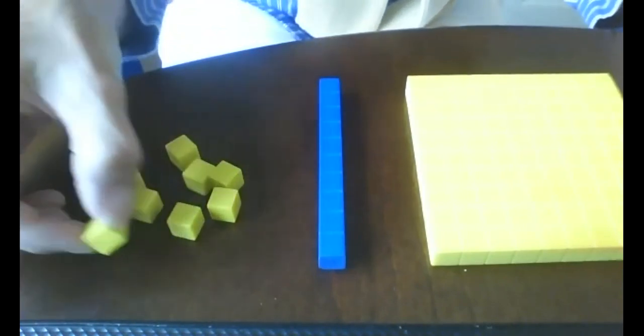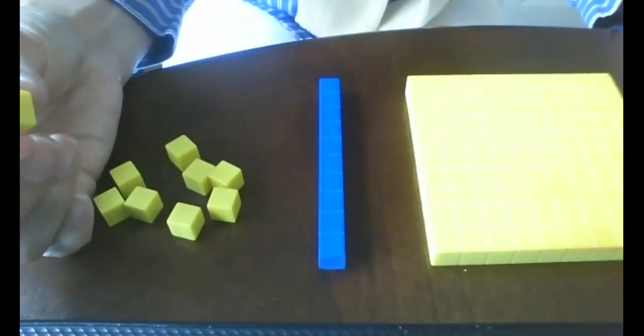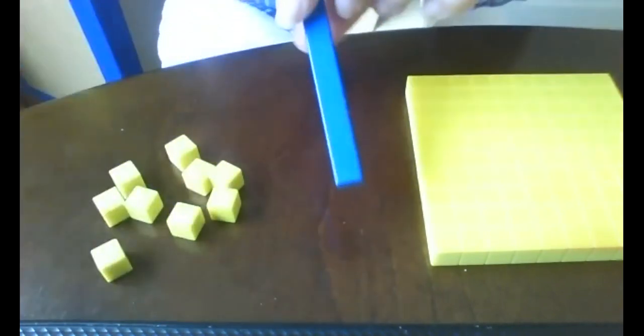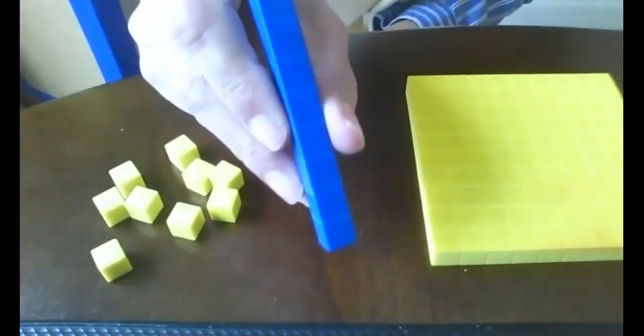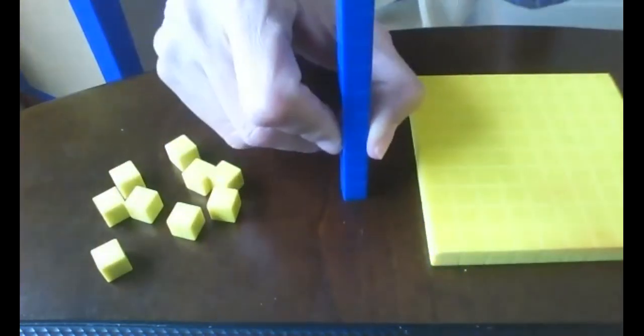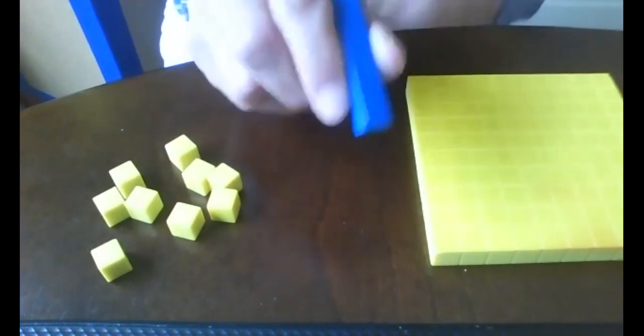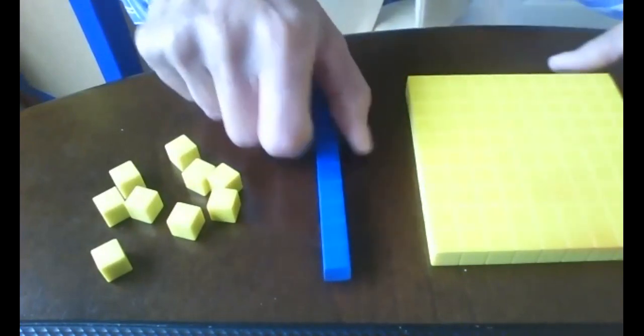They have materials called units, and these are counters that you're going to use to count by ones. Then you have a rod, and this is used to count by tens. And if you look at that, there are 10 different sections connected together. So whenever we use our rods, we're going to be counting by tens.